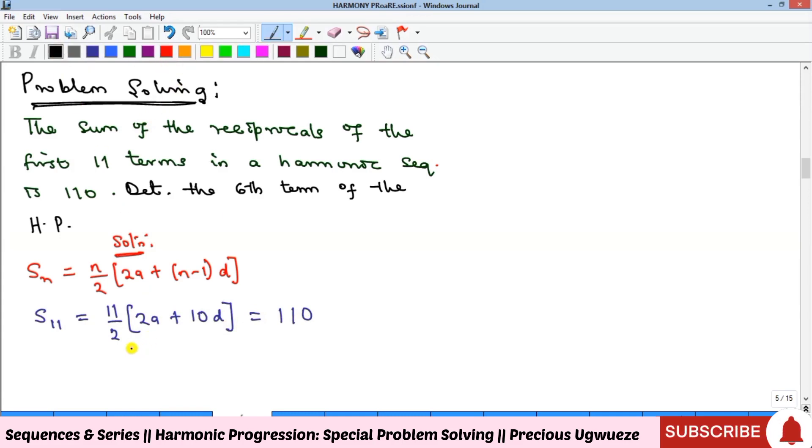If you open this bracket, 11/2 multiplying 2a gives 11a (the 2s cancel). Then 11/2 multiplying 10d gives 55d (11/2 times 10 equals 55). So we have 11a + 55d = 110.